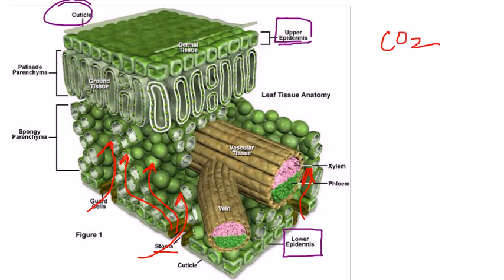So as carbon dioxide gas enters the leaf, it openly diffuses into a layer called the spongy layer. Now, if you want to take a guess as to why it's called the spongy layer, just think about a sponge. It's filled with air pockets.